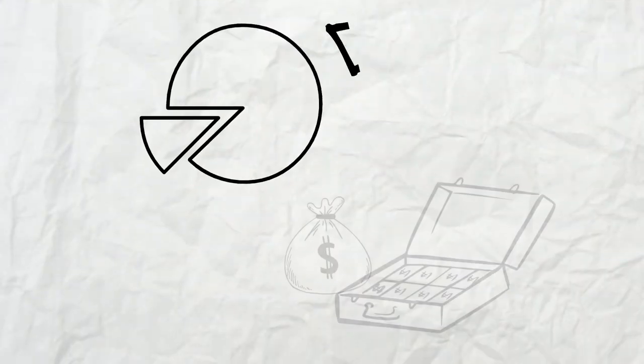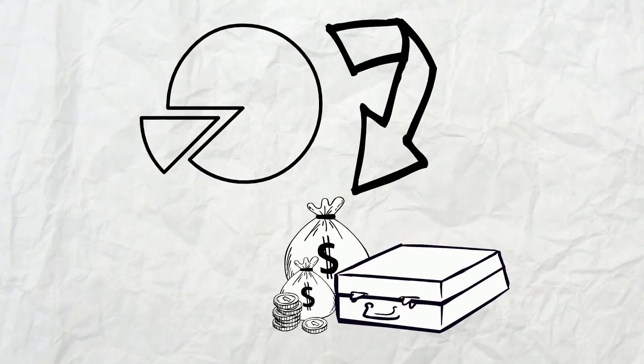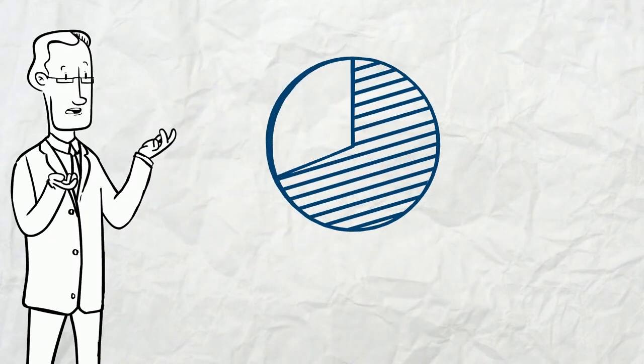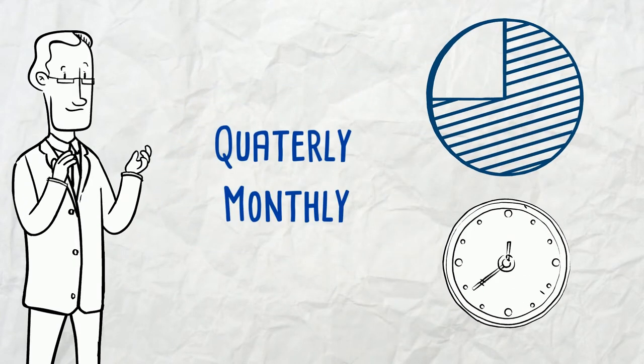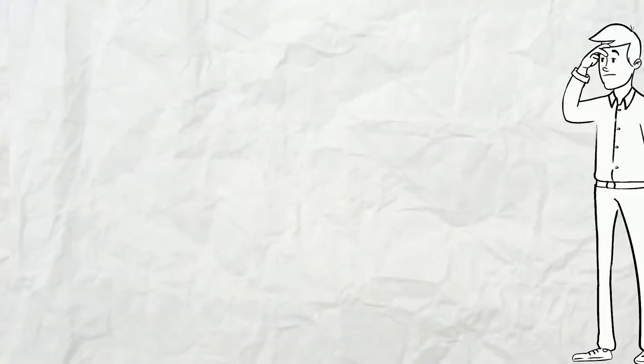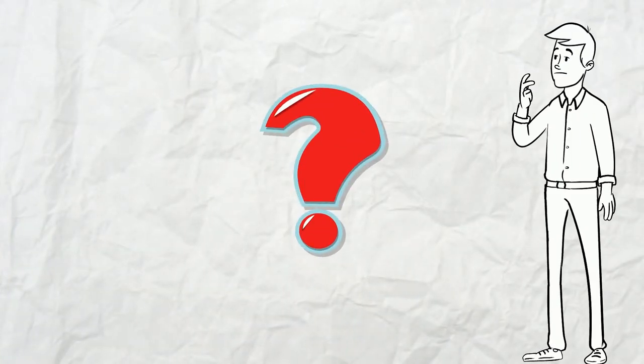This will indicate how much you could possibly earn at the end of every period from dividends. Choose companies with a higher dividend rate and a more frequent payout term, that is quarterly or monthly, though monthly dividend payouts are very rare to get. So why is this so important?